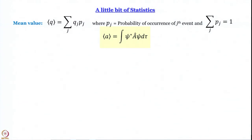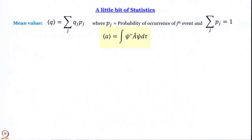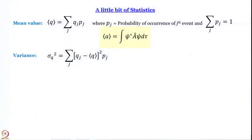In our assignments we have problems where we normalize wave functions and find expectation values — working through those will make this very clear. Now we are concerned not only with the mean value but also with the uncertainty. Uncertainty is represented by a statistical quantity called standard deviation, but to arrive at standard deviation it is better to talk about variance first. Variance is defined as Σⱼ (qⱼ − ⟨q⟩)² · pⱼ, written as σq² because ultimately we take its square root to get standard deviation.